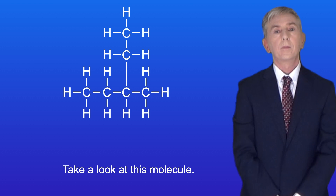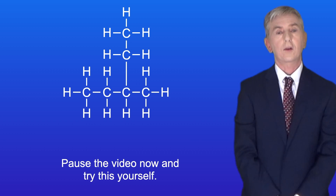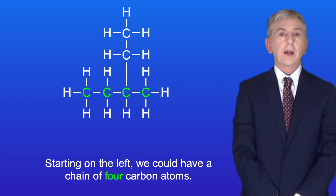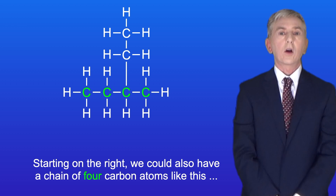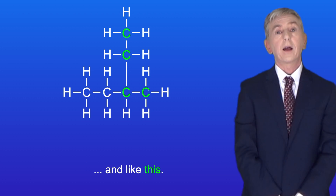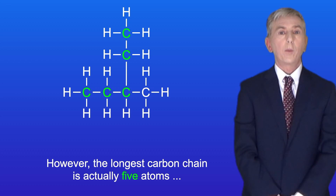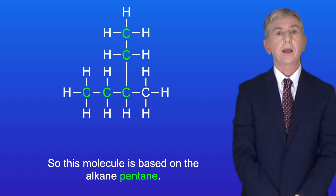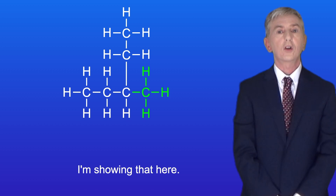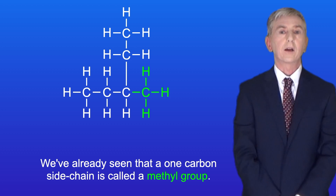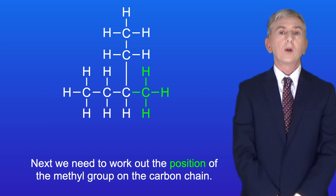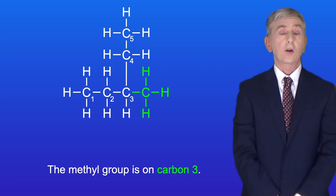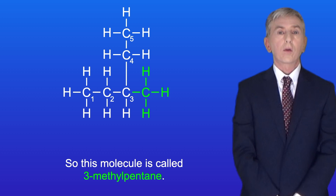Take a look at this molecule. I'd like you to try and name this, so pause the video now and try this yourself. Okay, first we identify the longest chain of carbon atoms. Starting on the left we could have a chain of four carbon atoms, and starting on the right we could also have a chain of four carbon atoms. However the longest carbon chain is actually five atoms. So this molecule is based on the alkane pentane. We have a side chain with one carbon atom, and a one-carbon side chain is called a methyl group. The methyl group is on carbon 3, so this molecule is called 3-methylpentane.